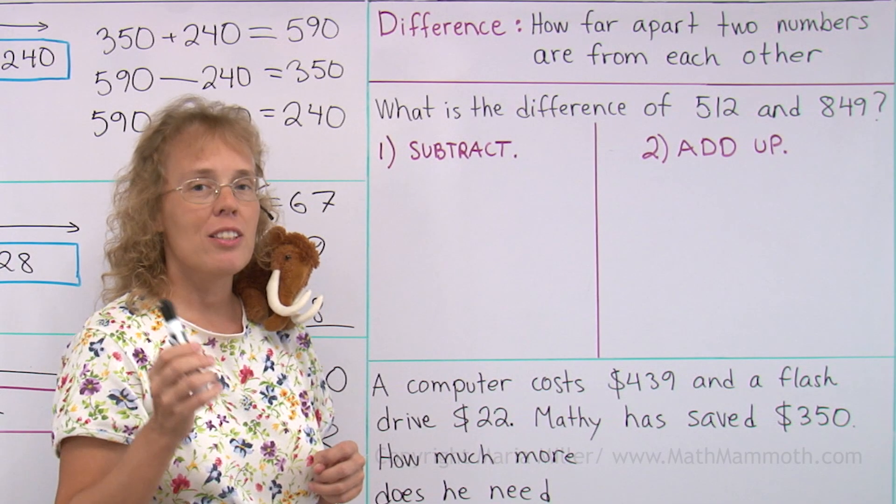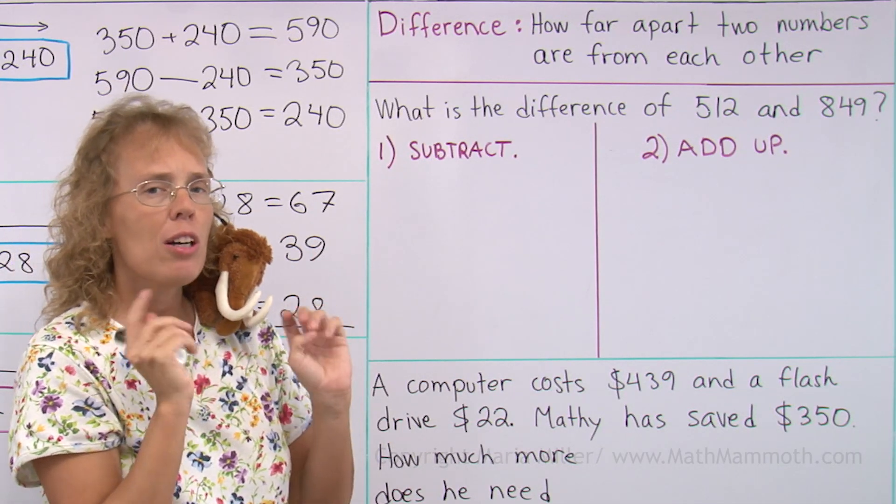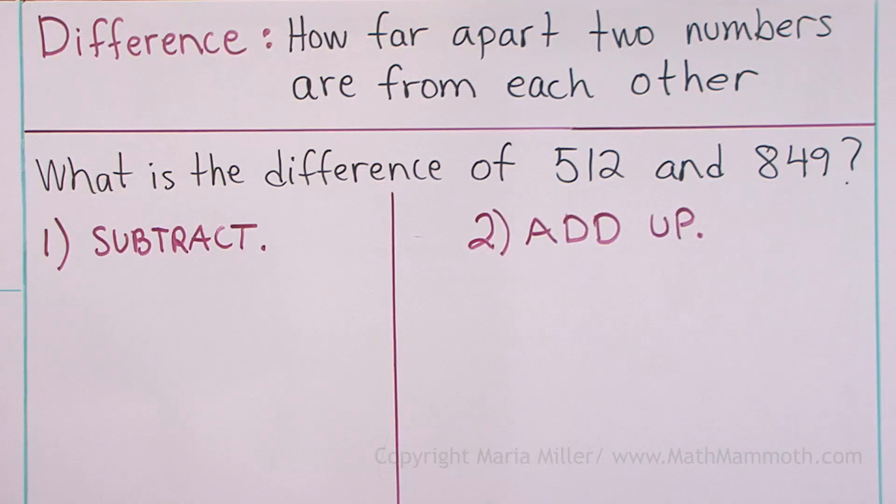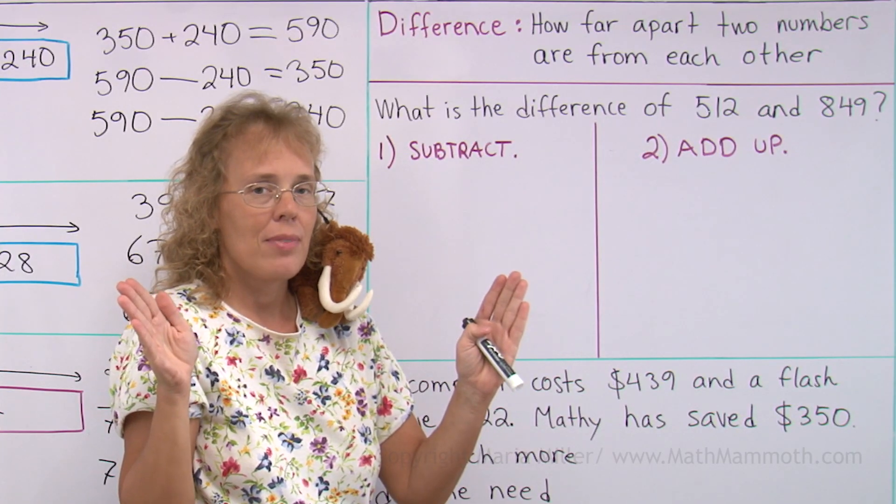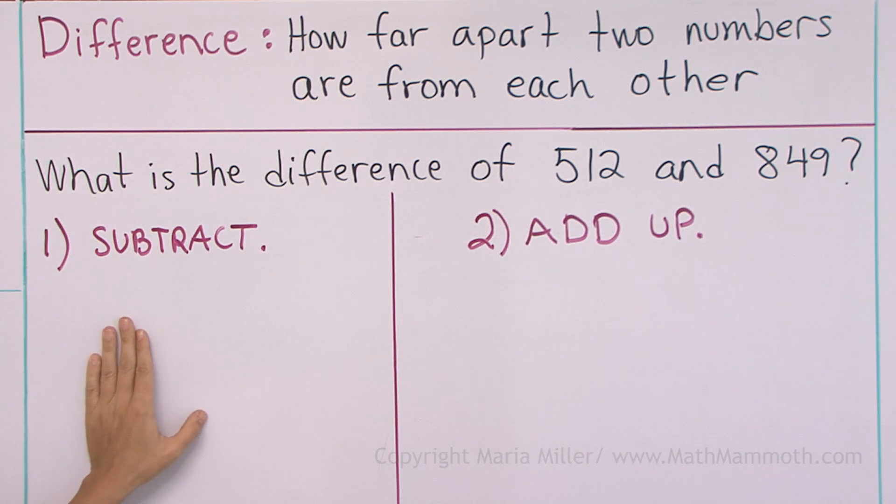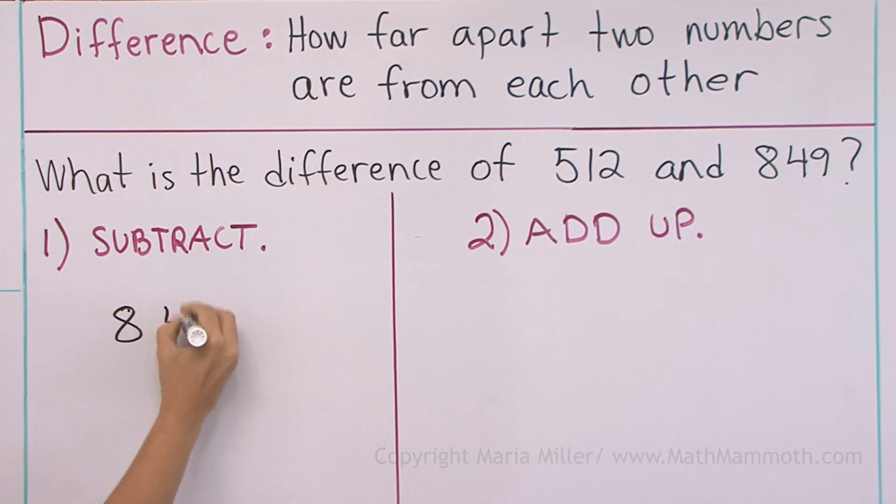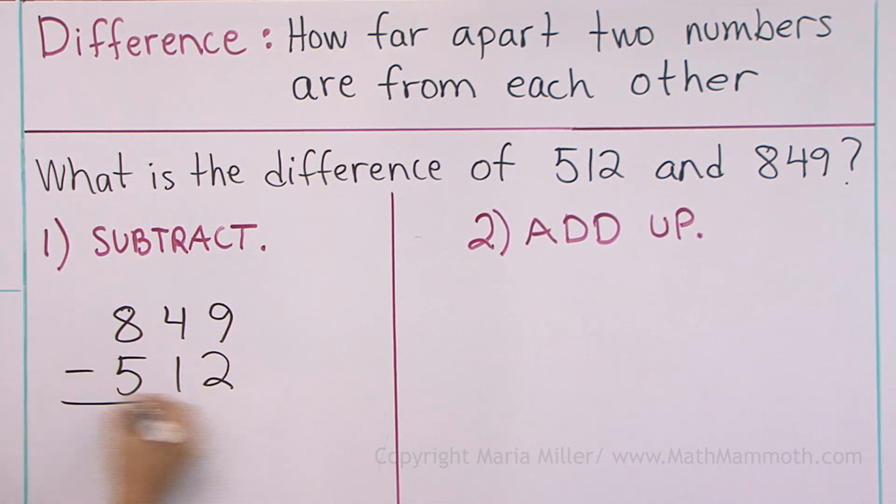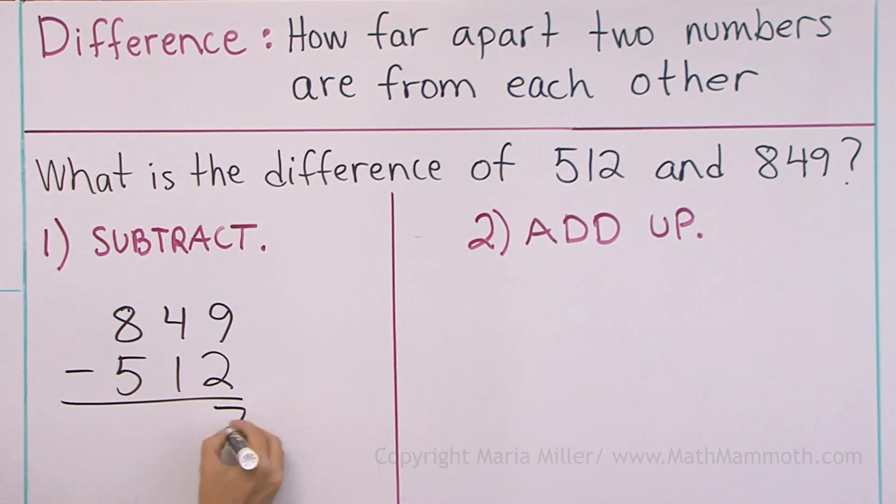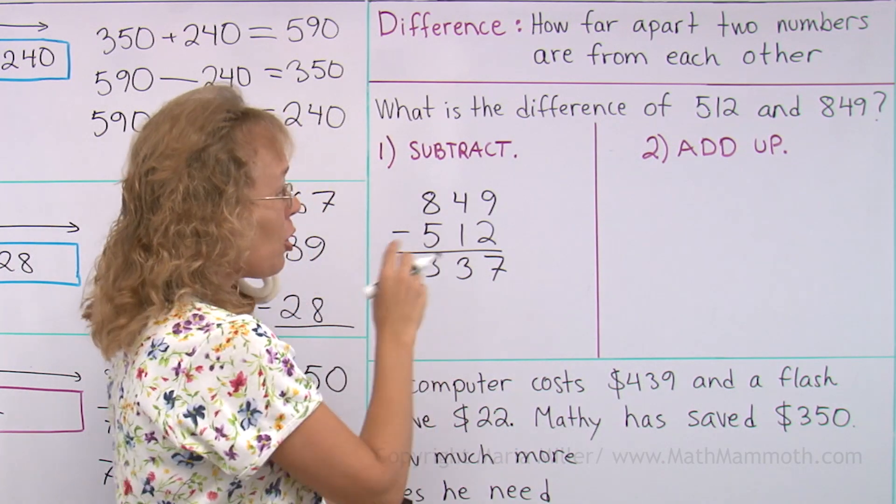Now just a little bit of a reminder again. The difference of two numbers means how far apart those two numbers are from each other. What is the difference of 512 and 849? How far apart are they? I can solve it in two manners. One is I can subtract the numbers. Let's do that: 849 minus 512. We have really easy numbers, so the difference is 337. I'll show you also another method.